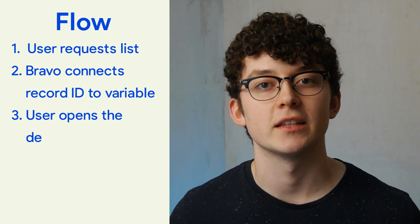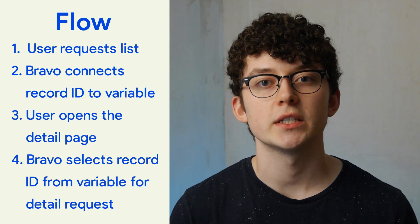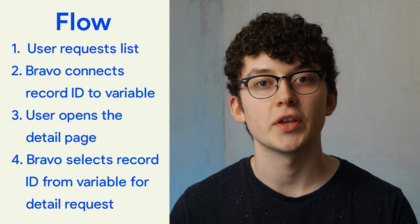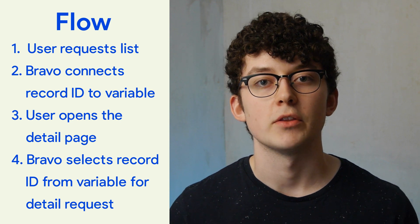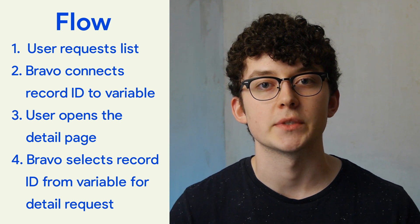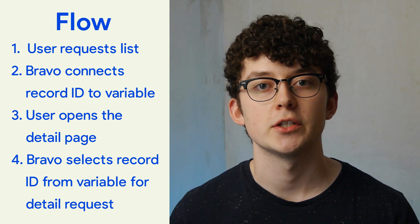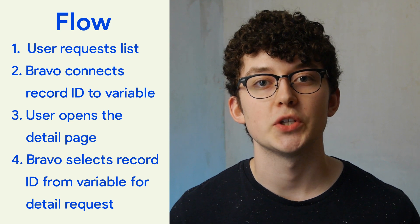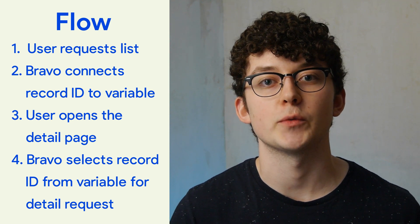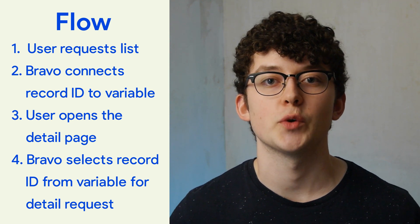Let's recap the flow. First the user requests the list. For every record we associate the record ID with our variable. The user presses one of the list items which takes them to the detail page. We know exactly which item was pressed, so we can take that record ID and paste it into our detail request.